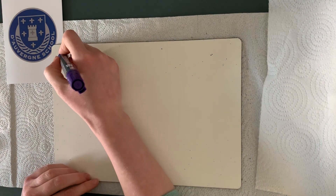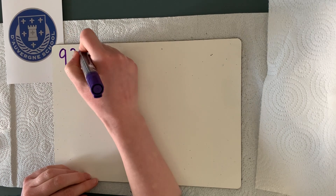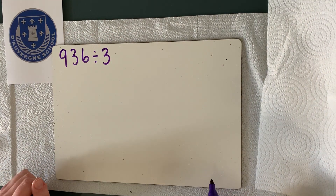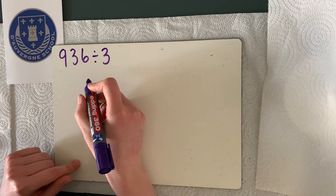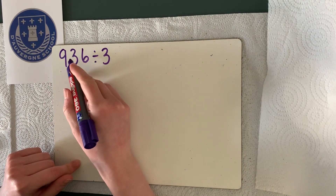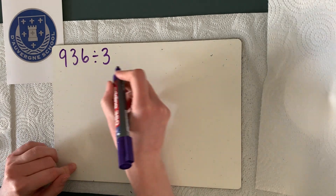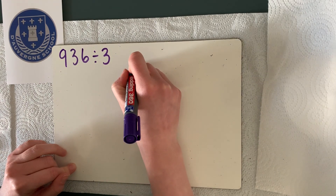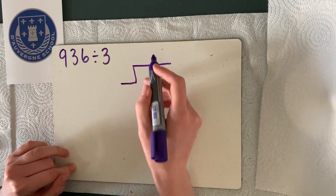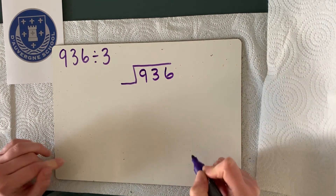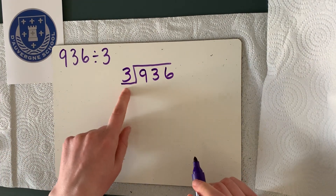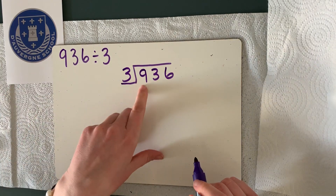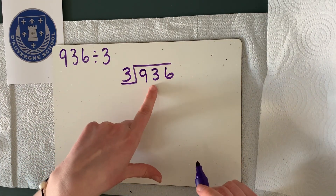So the bus stop method — if we're looking at 936 divided by 3, that's what we're going to work through just now. When we're doing our bus stop method, we have to remember how to write it first of all. We have to think about our biggest number, our dividend, and our divisor, the number we're dividing it by. Our dividend sits inside the bus, and the divisor — the smaller number — is the number that is driving the bus. So we've got the bus driver, our divisor, and we've got our dividend, which is the number we're dividing, sitting inside the bus.